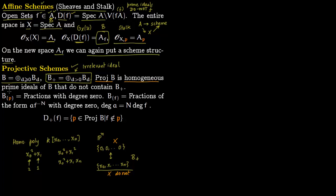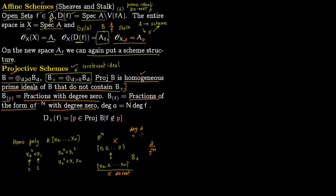Proj(B) is the set of homogeneous prime ideals of B that do not contain B₊ — that is, that do not contain the ideal generated by X₀, X₁, …, Xₙ. Instead of standard prime ideals you consider homogeneous prime ideals. The stalk B_(P) consists of fractions of degree 0. Similarly, B_(F) consists of fractions of the form A/Fⁿ where the degree of A equals N times the degree of F, so that the fraction has degree 0.